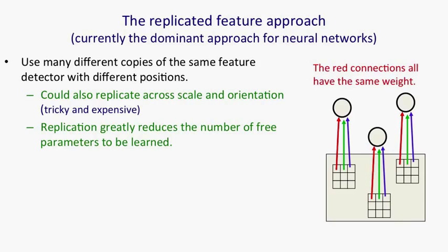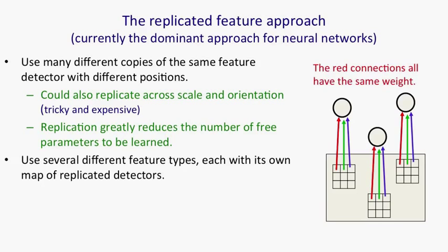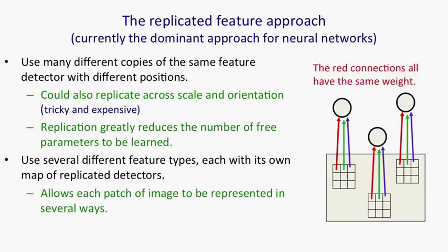Now we don't just want to use one feature type, so we're going to have many maps. Each map will have replicas of the same feature, features that are constrained to be identical in different places. And then different maps will learn to detect different features. This allows each patch of the image to be represented by features of many different types.